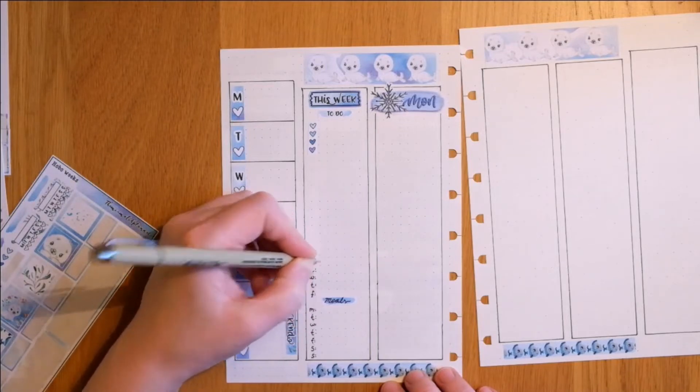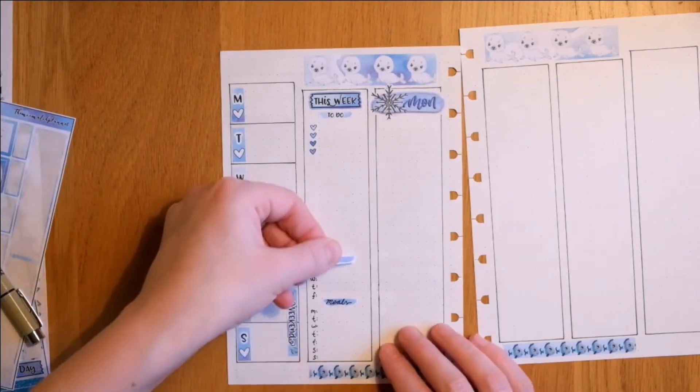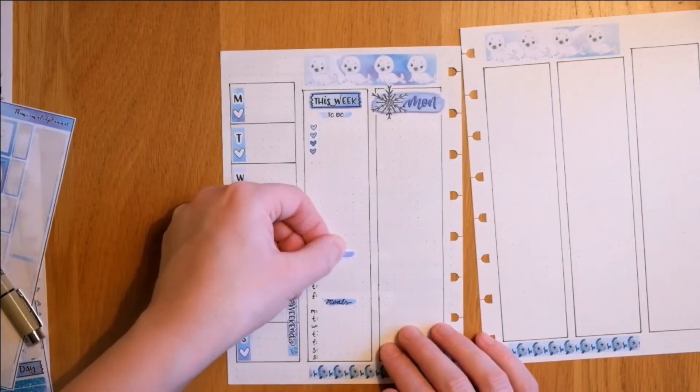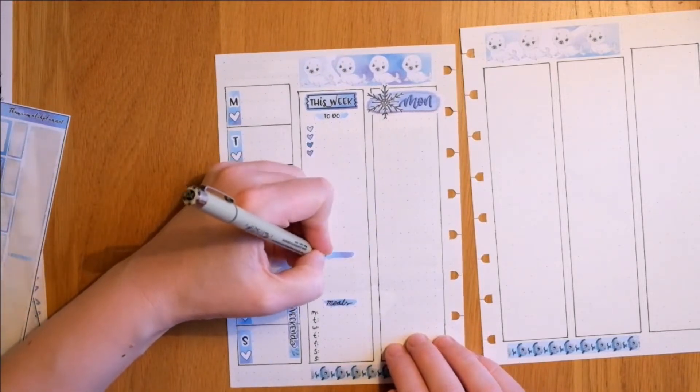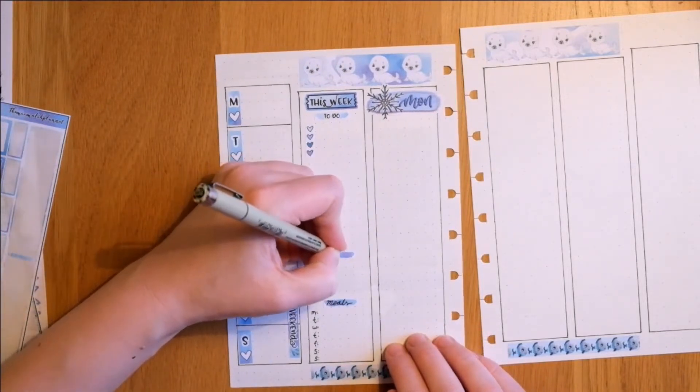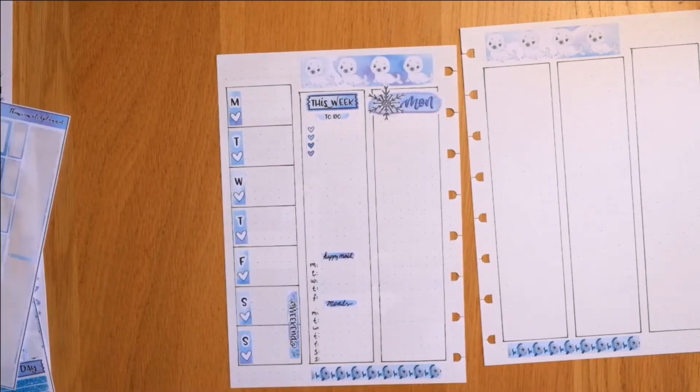And that was the meal tracker. And here's the happy meal tracker. And above that, I put down the two habit trackers that come with the sticker kit. And that's basically how it looks.